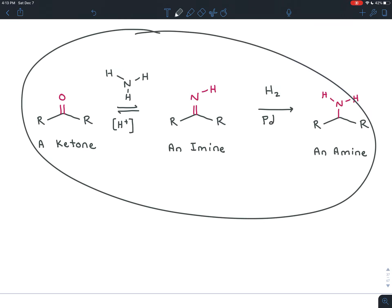You could have this whole slurry all happening at once. Pour your ketone into a beaker. Pour some ammonia in there and a little bit of acid catalyst. And then bubble hydrogen gas through and sprinkle some palladium metal. And little by little, the ketone that you had will turn into an amine.